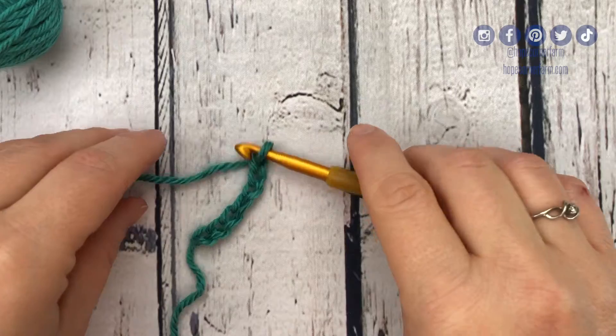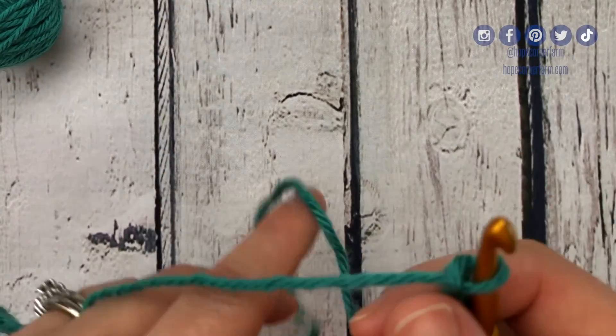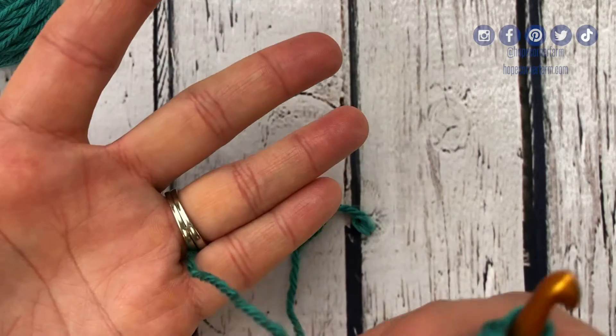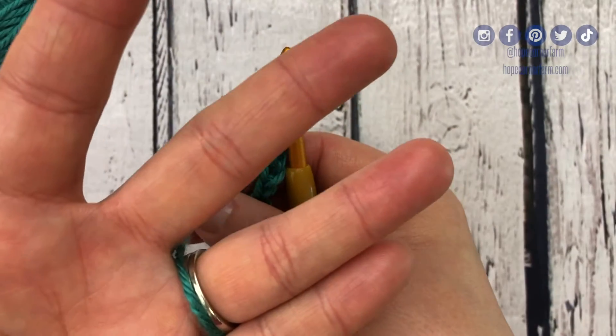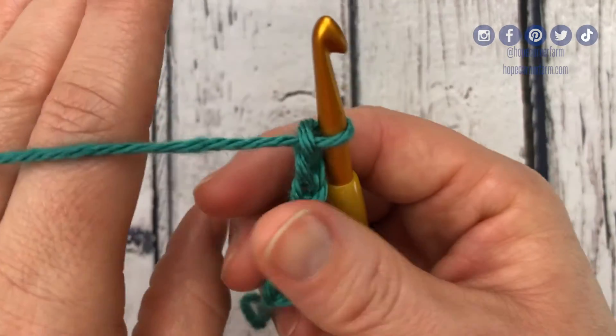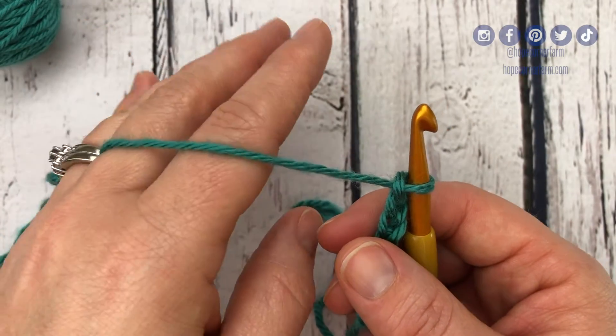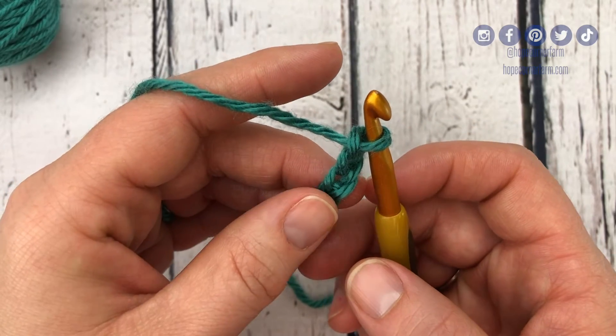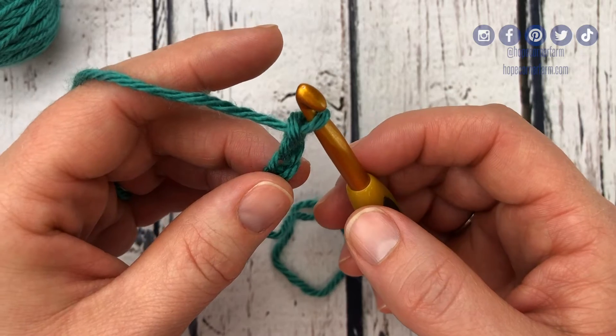We'll get going by putting our yarn into our left hand for tension. I create tension by going between my pinky and my ring finger, on the backside of my ring finger, up between my ring and my middle, come over and drape over top of my middle and my index finger. Then I grab onto my chain with my thumb and my middle finger on my left hand. I'm a right-handed crocheter.